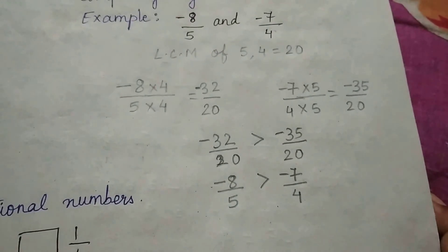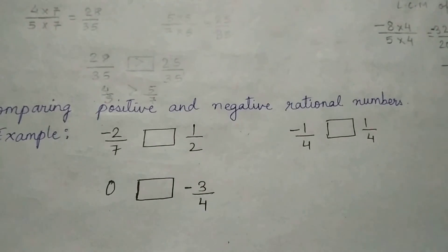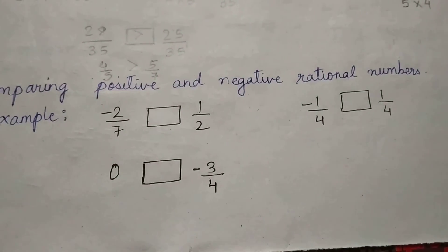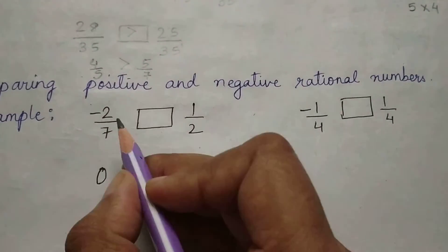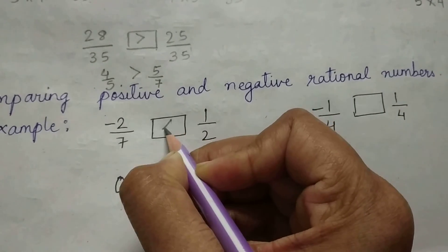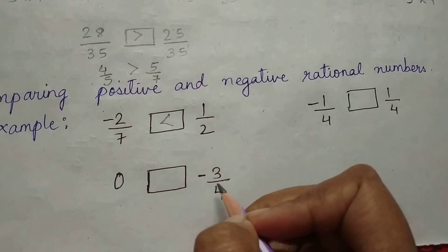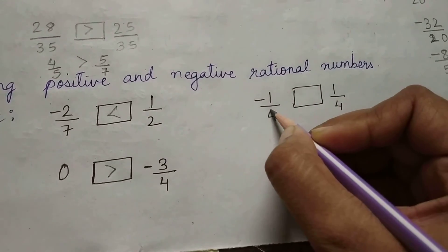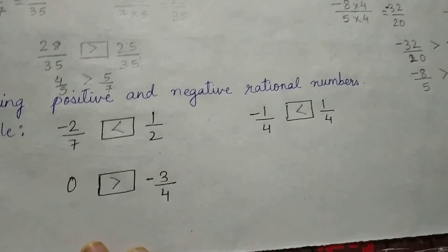If you are told to compare a positive and a negative rational number, always remember that a positive rational number is always greater than a negative rational number. For example, zero is greater than minus 3 by 4. And minus 1 by 4 compared to 1 by 4: since minus 1 by 4 is negative and 1 by 4 is positive, minus 1 by 4 is smaller than 1 by 4.